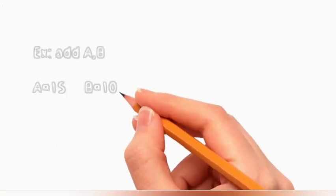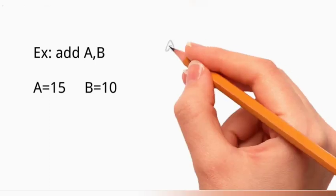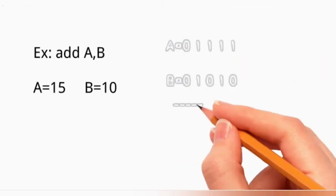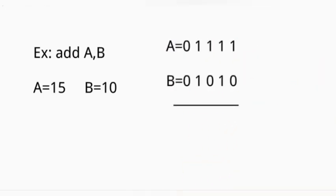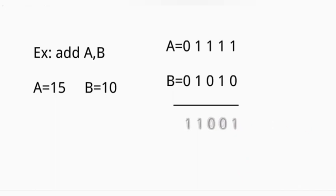Let's see an example for second generation. Example: add A comma B. We assume A equals 15 and B equals 10. You have to convert this into binary form. A equals 01111, B equals 01010. While adding both values you will get 11001, that is 25.